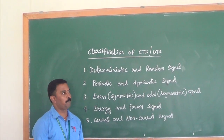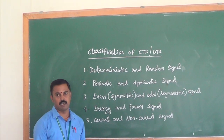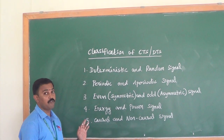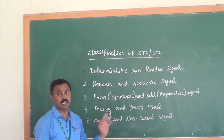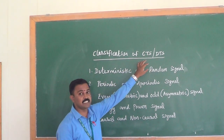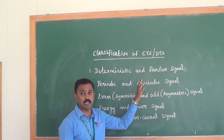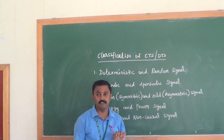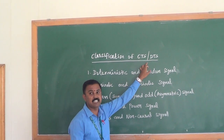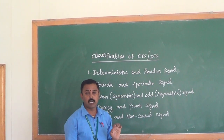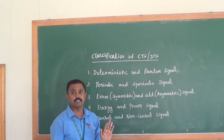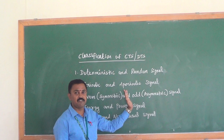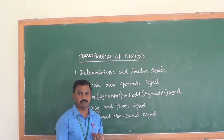Good morning, dear friends. In the previous section we discussed what a signal is and the classification of signals. Next we continue with the classification of continuous type signals as well as discrete type signals. The whole classification will use the same definitions for both, with the only difference being that continuous uses x(t) while discrete uses x(n).